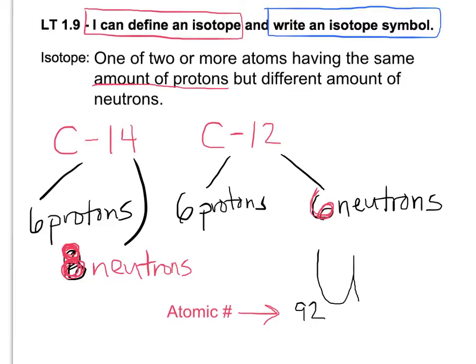In the top corner goes the mass. So we're talking about uranium-235. So I'm going to write the mass, which is 235. So that is where the mass goes. So that is how we write an isotope symbol, right there.